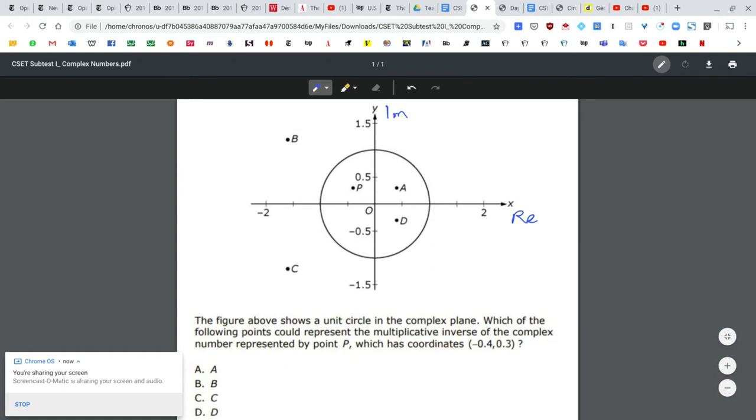It says which of the following points could represent the multiplicative inverse. As a general concept, the multiplicative inverse of a is basically 1 over a, so the product will give you 1. That's the multiplicative inverse.